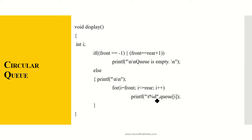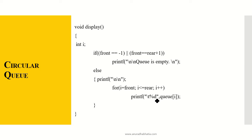For display: if front equals minus 1 or front equals rear plus 1, print 'queue is empty.' Else use a loop from front to rear with i++ and print all elements of the queue. This completes the implementation of circular queue using arrays.